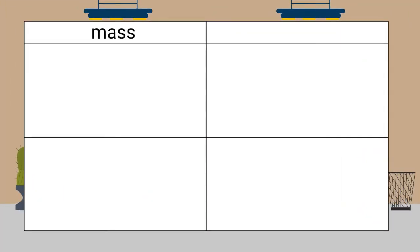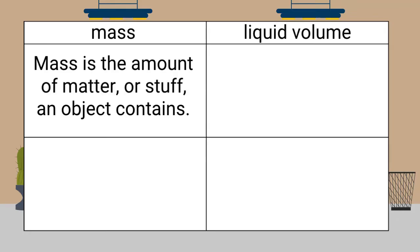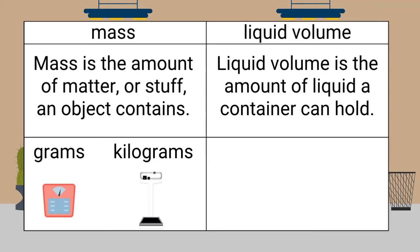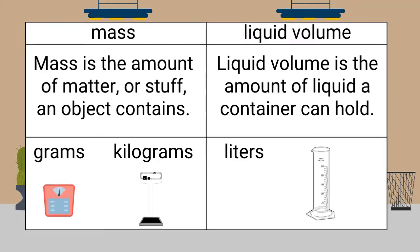This chart will help us compare mass and liquid volume. Mass is the amount of matter an object contains. Mass can be measured in grams and kilograms. We can use a scale to measure mass. Liquid volume is the amount of liquid a container can hold. Liquid volume can be measured in liters. A graduated cylinder can be used to measure liquid volume.